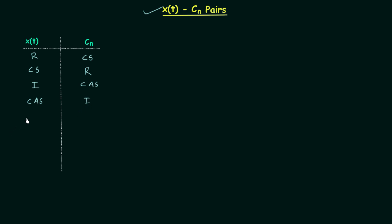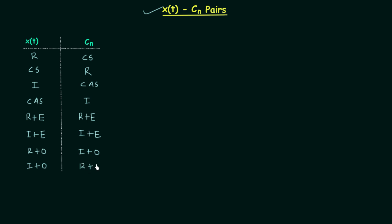When xt is real as well as even, cn is real as well as even. When xt is imaginary and even, cn is also imaginary and even. When xt is real and odd, cn is imaginary and odd. When xt is imaginary and odd, cn is real and odd. These are the xt-cn pairs and they are very important while solving the objective questions.